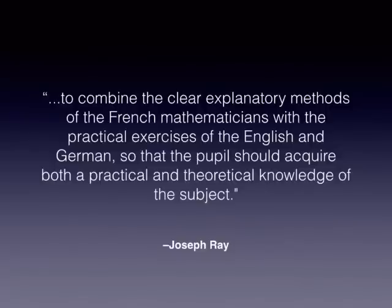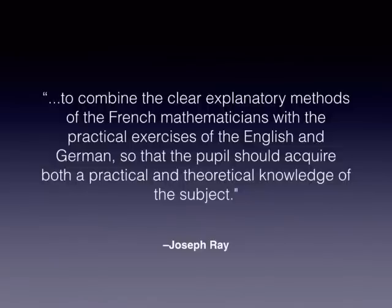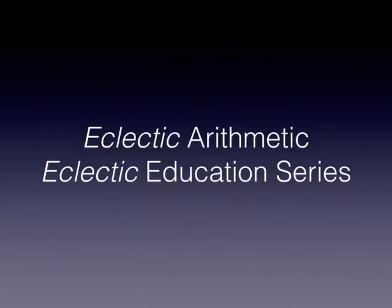How did he do that? He drew on what he had learned both as a student and as a teacher. He was a principal, a college professor, a high school teacher, a grade school teacher — he taught small children, older children, and adults, and he loved mathematics all his life. He had studied prior mathematicians from other cultures and countries, and he brought together the best of their methods. He took the clear explanatory style of French mathematicians and the practical applications of English and German approaches, combining them so a student could have both practical and theoretical understanding. That's why his arithmetics, first published in 1834, were known as eclectic arithmetic — the first work to combine all these different schools of thought.